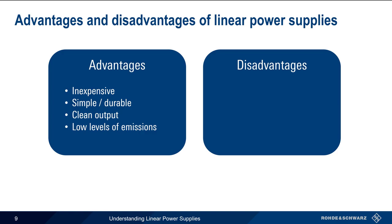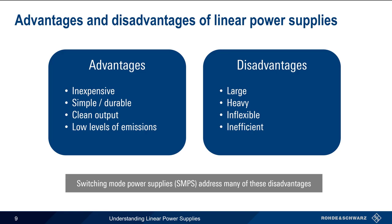On the other hand, these types of power supplies also tend to be both large and heavy, primarily due to the size of the transformer and filter capacitors. Linear power supplies are also somewhat inflexible with regards to operating at different input and output voltages. In addition, linear power supplies can be inefficient, especially at higher output powers. For applications where these disadvantages outweigh the advantages, switching mode power supplies are often used instead.